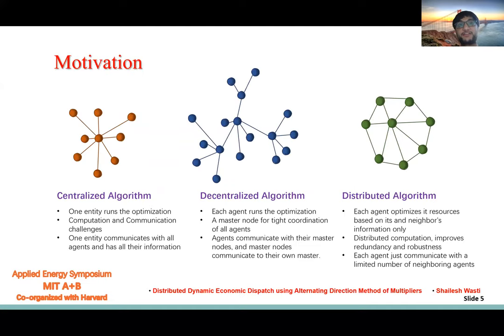Before I dive into economic dispatch problem in particular, here is the overview on the architecture of different algorithms: centralized, decentralized, and distributed. In centralized, a central entity collects all the required data and runs the optimization. In decentralized, each agent does its own optimization but it needs a coordinator or master nodes that tightly coordinate with all the agents of the market in order to clear it.